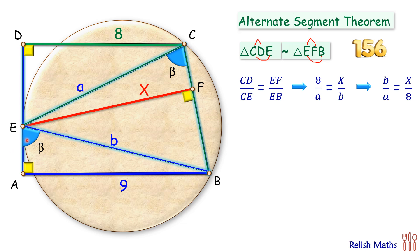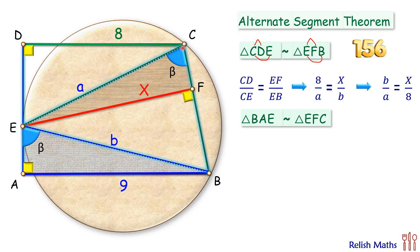So here if you look at the triangle BAE and triangle EFC, these two triangles will be similar by angle-angle similarity and thus the ratio of the sides will be equal. Now putting the values here, BA is 9 centimeter and BE is b centimeter.